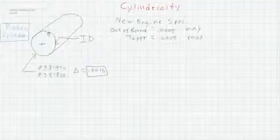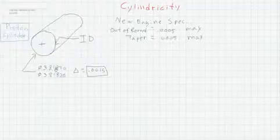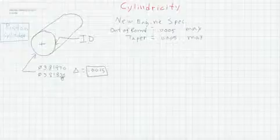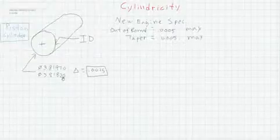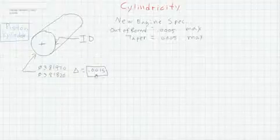The engine specifications that we have would be a diameter of 3.8197 to a diameter of 3.8182, that's our limits of size, which gives us a size variability of up to 0.0015.